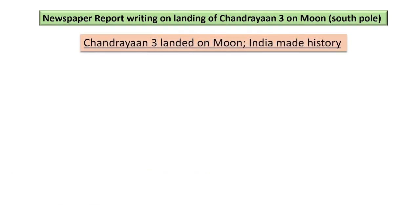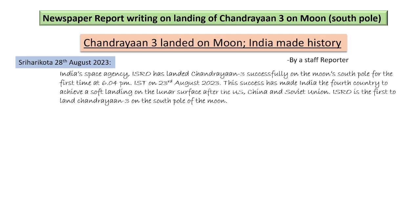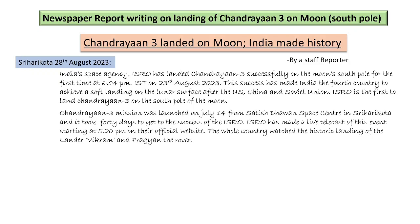Chandrayaan-3 landed on moon — India made history. Sriharikota, 28th August 2023. By our reporter. India's space agency ISRO has landed Chandrayaan-3 successfully on the moon's south pole for the first time at 6:04 PM IST on 23rd August 2023. This success has made India the fourth country to achieve a soft landing on the lunar surface after the US, China, and Soviet Union. ISRO is the first to land Chandrayaan-3 on the south pole of the moon. The mission was launched on July 14 from Satish Dhawan Space Center in Sriharikota, and it took 40 days to achieve this success. ISRO made a live telecast of this event starting at 5:20 PM on their official website. The whole country watched the historic landing of lander Vikram and the Pragya rover.